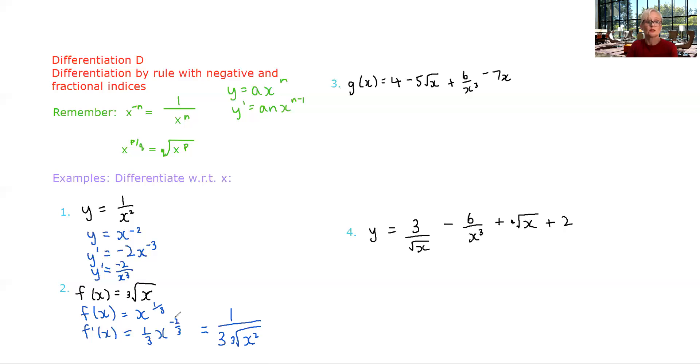Okay. So negative index means it's reciprocal. Fractional index, the numerator is what you're raising x to, the denominator is the root that you're taking. Okay. Please don't let this confuse you. It's the same rule as always. We just need to be good with our index laws.